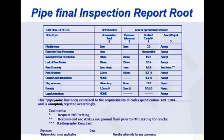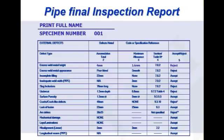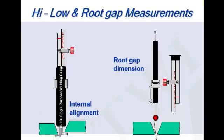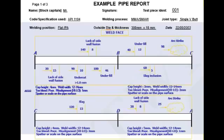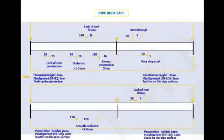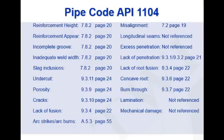You can write in your report: 'The pipe has been examined to the requirements of API 1104 and is rejected accordingly.' It is rejected, and further testing is recommended — such as radiography. This reinforcement height clause is at section 7.8.2 in API 1104.